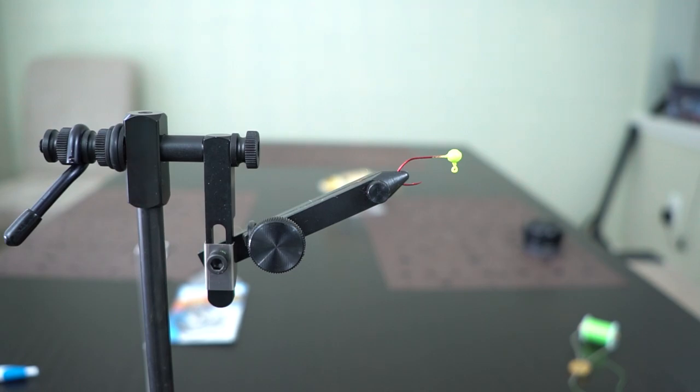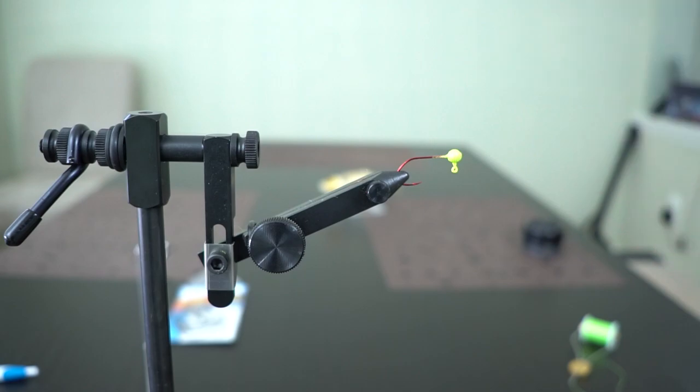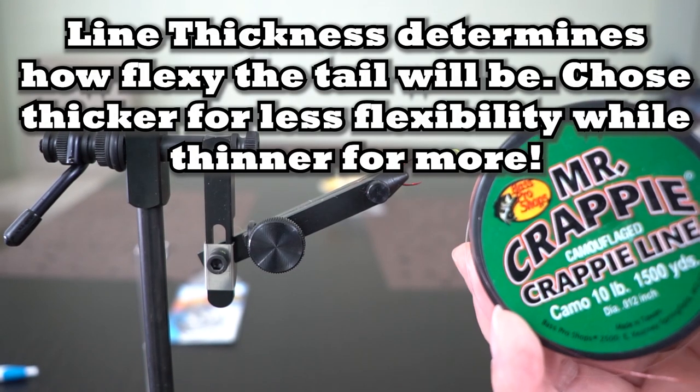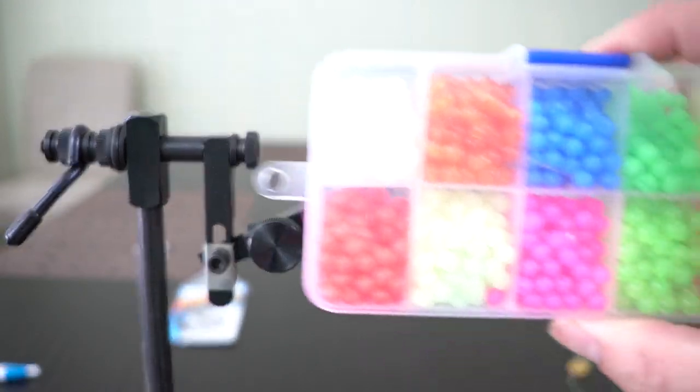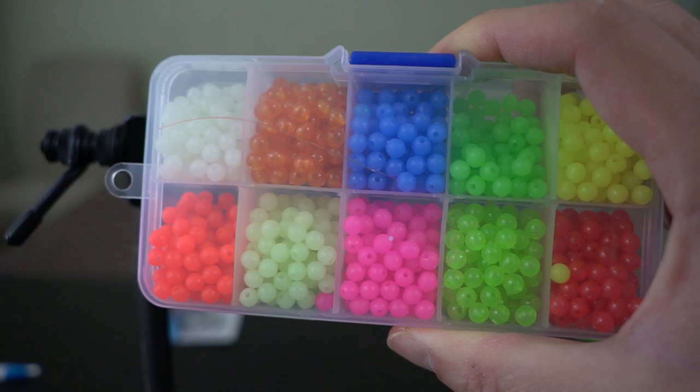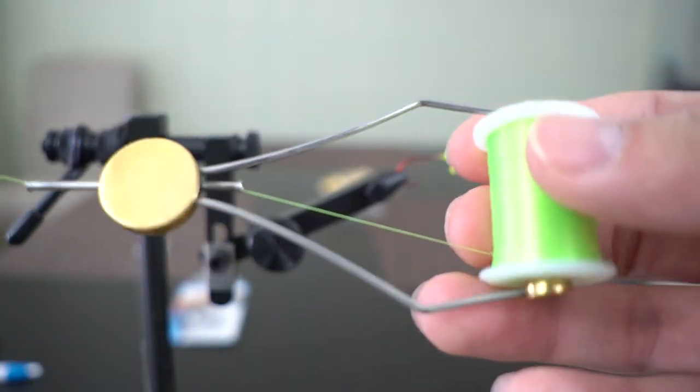A couple of things you need for this project here. One, you're going to need a jig hook. I'm going to tie 1/32nd to 1/16th ounce, but you guys can go with whatever you want. You guys are going to need some line. I have some old crappie line here, this is 10 pounds. You're going to need your floating beads or any sort of beads that you want to use, some chenille, and of course some thread.